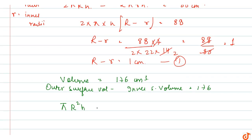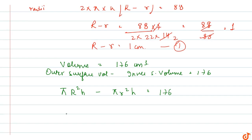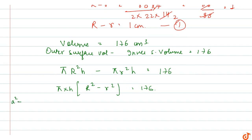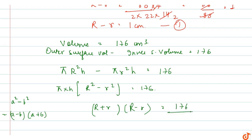With R as the outer radius and r as the inner radius, this equals 176 cm³. Taking π and h common, we get R² minus r² = 176 divided by π times h. Using the formula a² minus b² = (a minus b)(a plus b), we get (R plus r)(R minus r) = 176 divided by π times h.